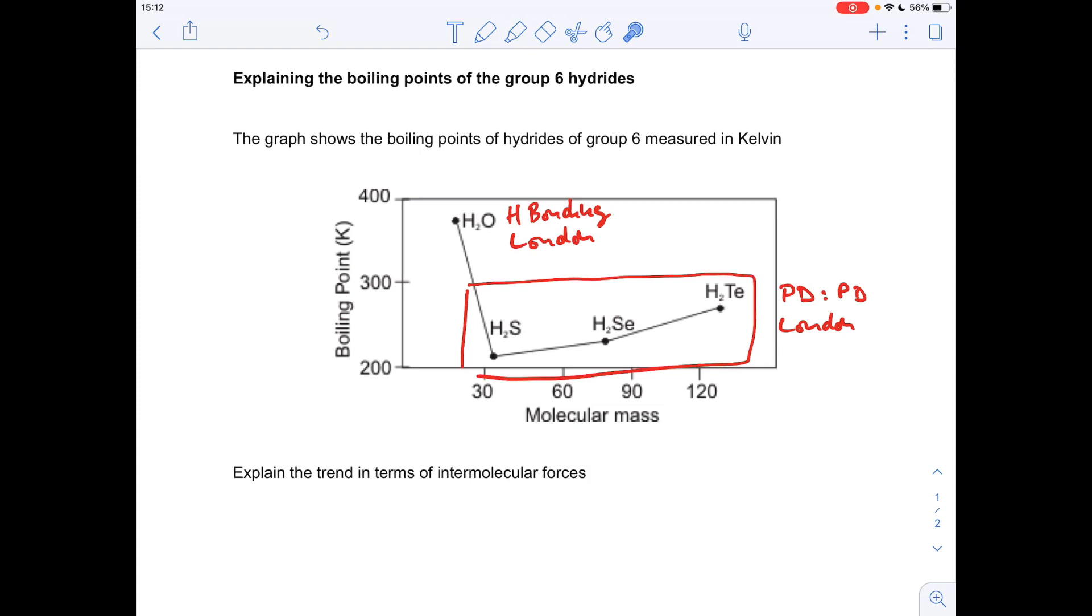So between H2O molecules we've got hydrogen bonding, and that's because we've got an H directly bonded to an O, so a highly electronegative atom, and we've also got London forces.